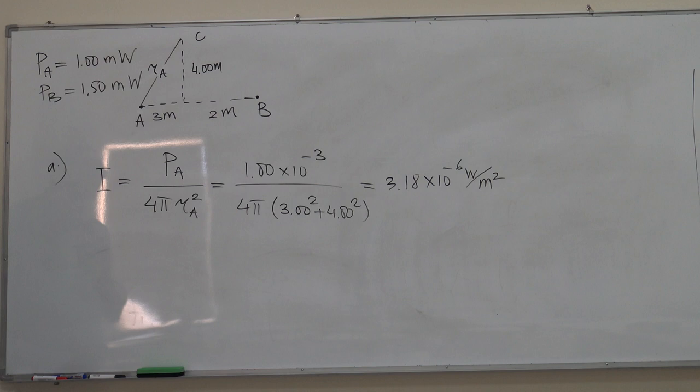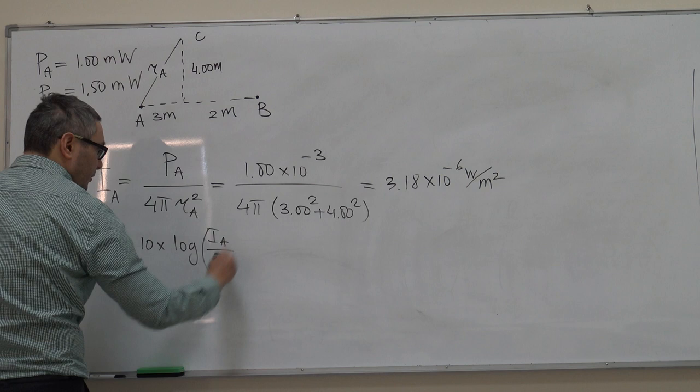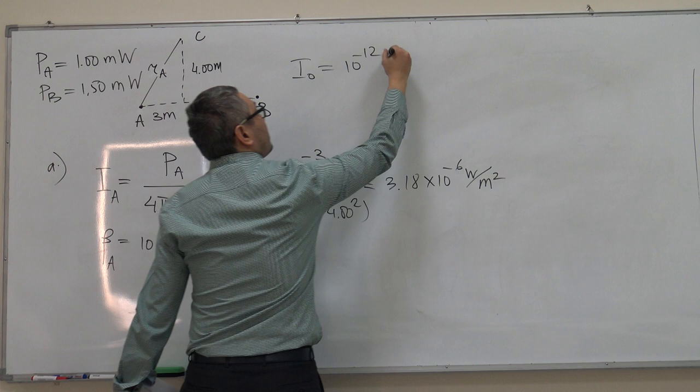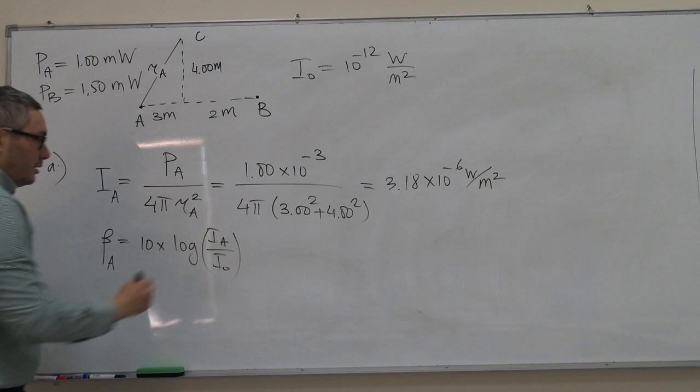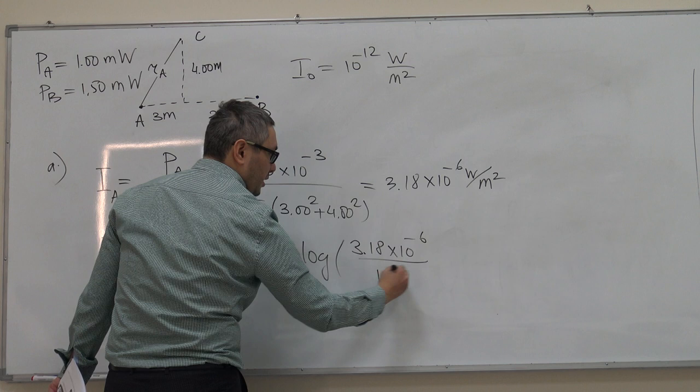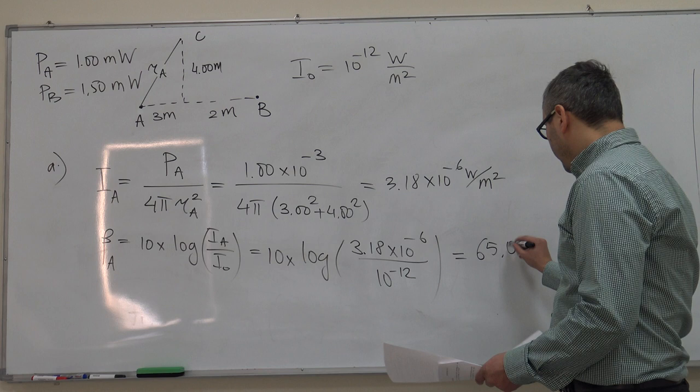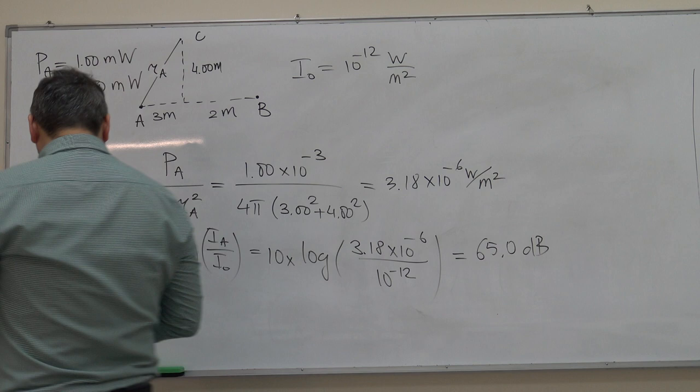If we know the intensity, we can now calculate the loudness, that is beta. Let's call it beta_A, and this is I_A. That would be 10 times log of I_A over I_0. As you remember, I_0 is a constant which is 10 to minus 12 watt per meter squared, known as the hearing threshold. We have 10 times log of this over 10 to minus 12. If you substitute, the value that you get is 65 decibels.